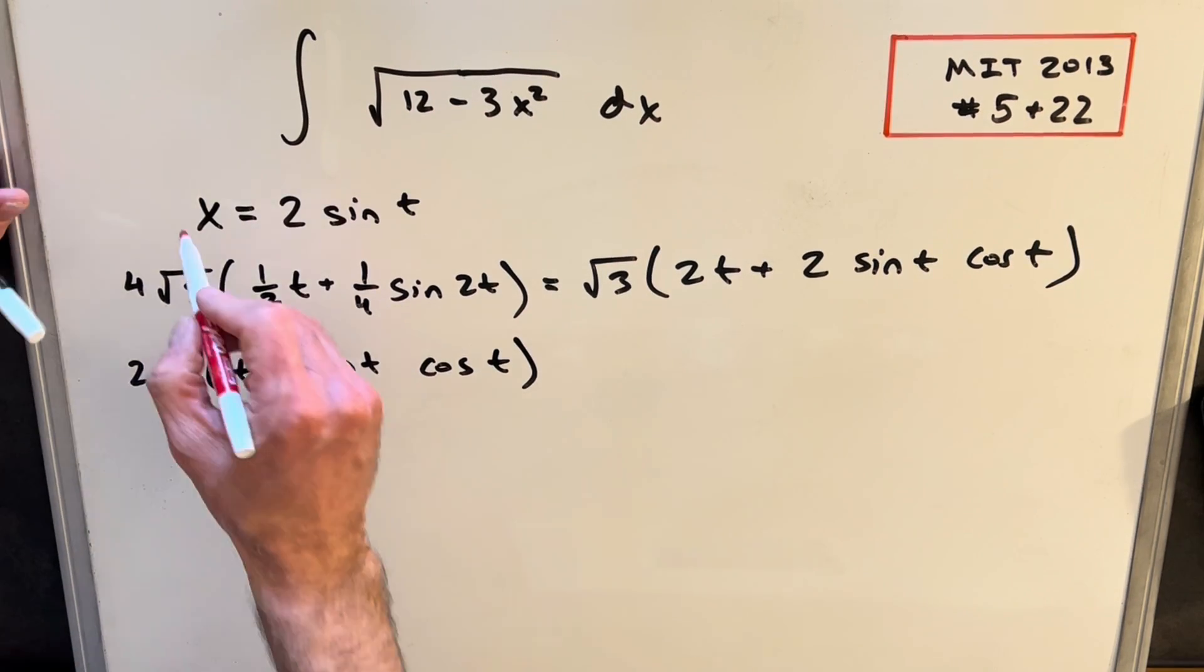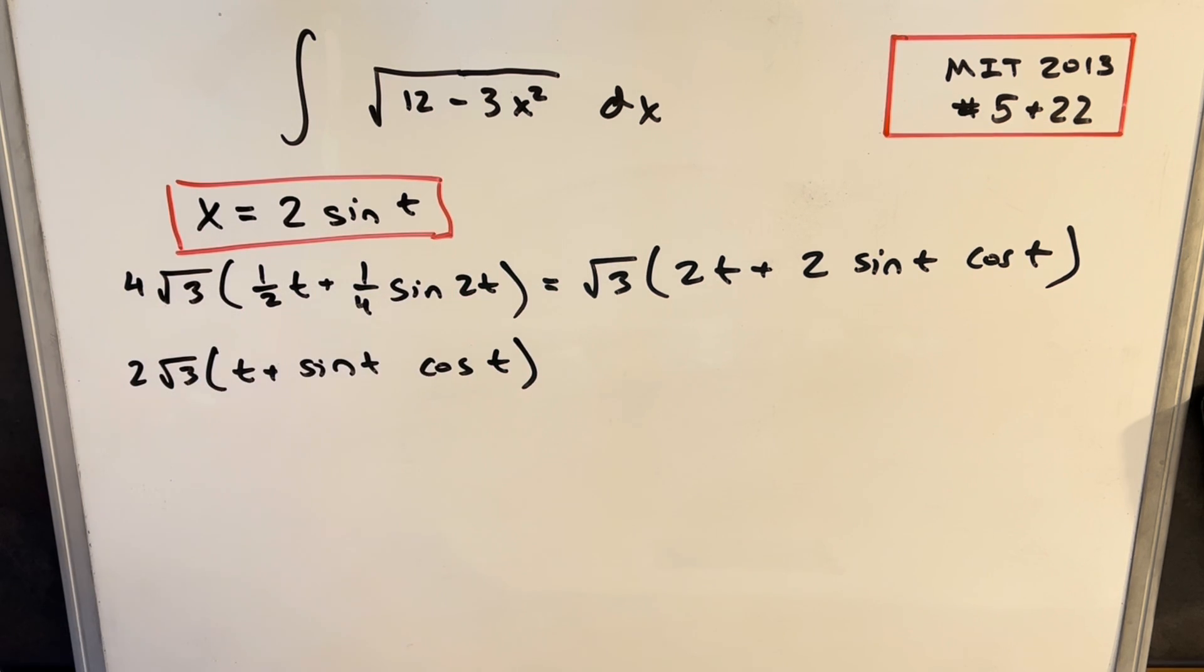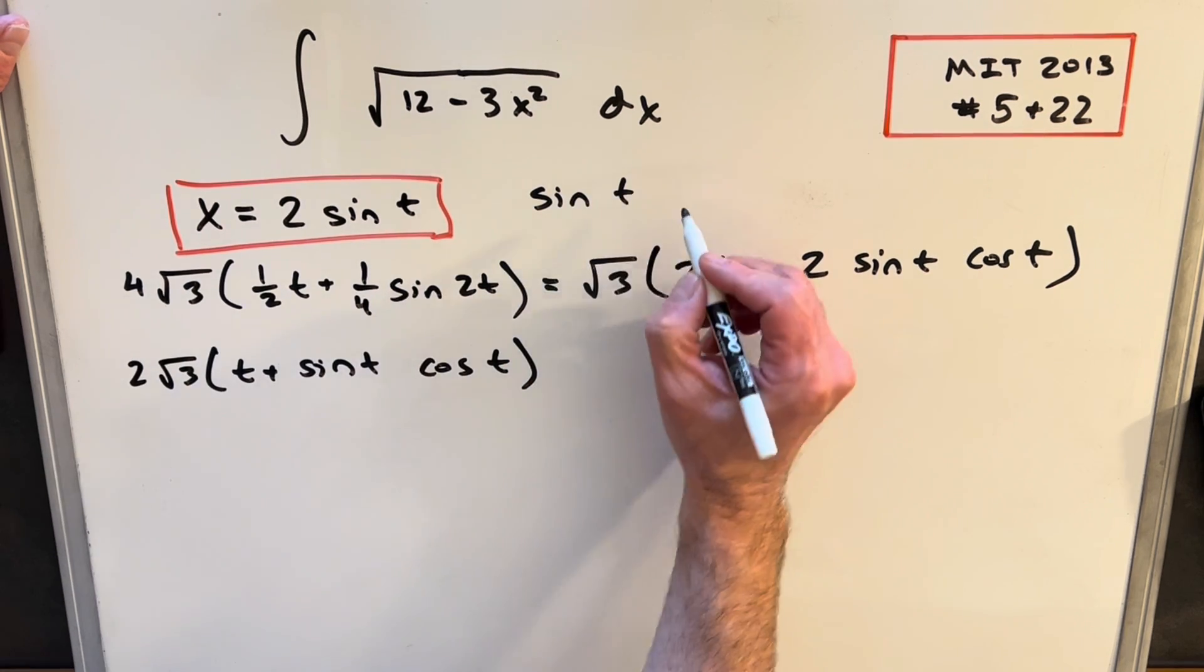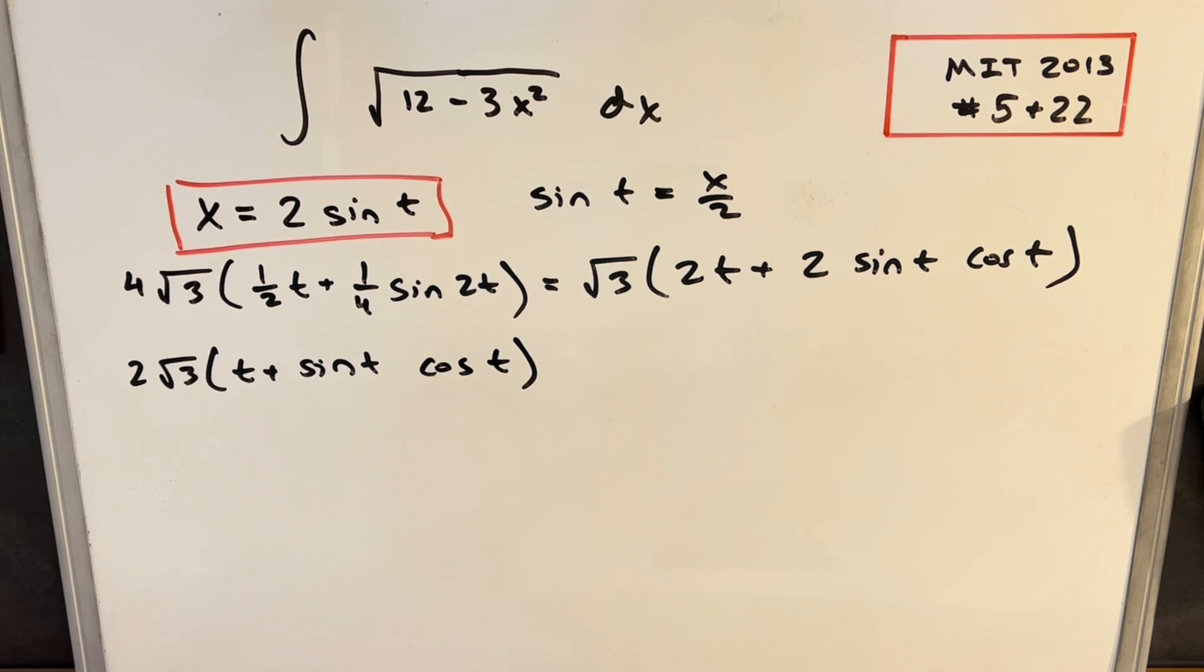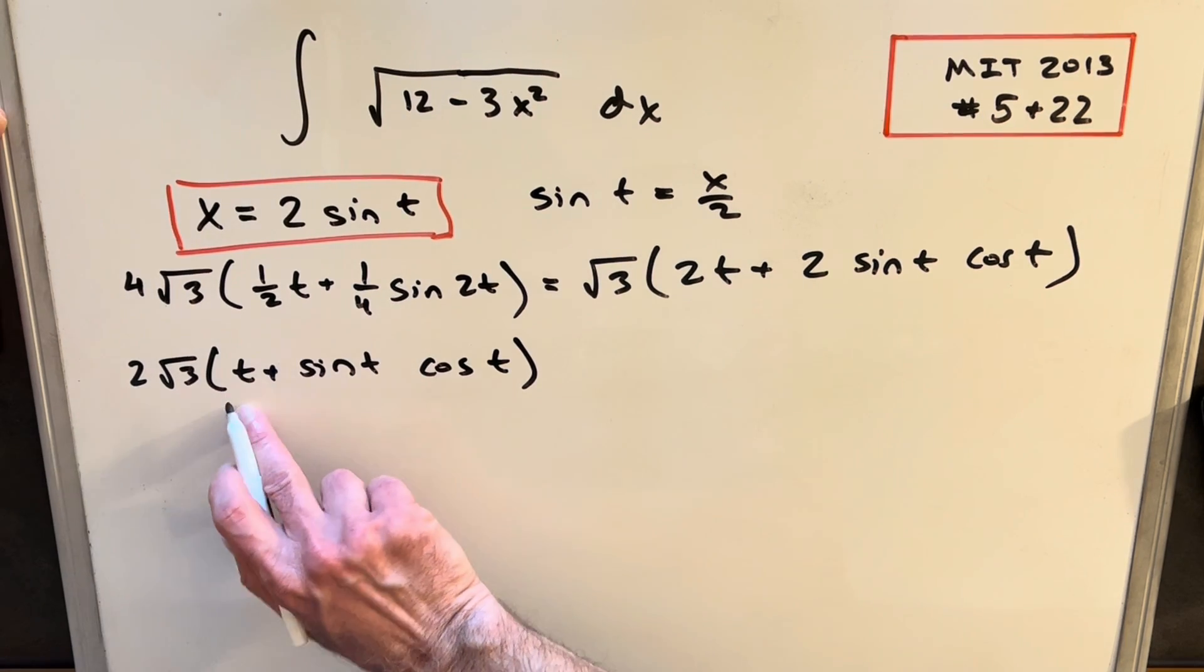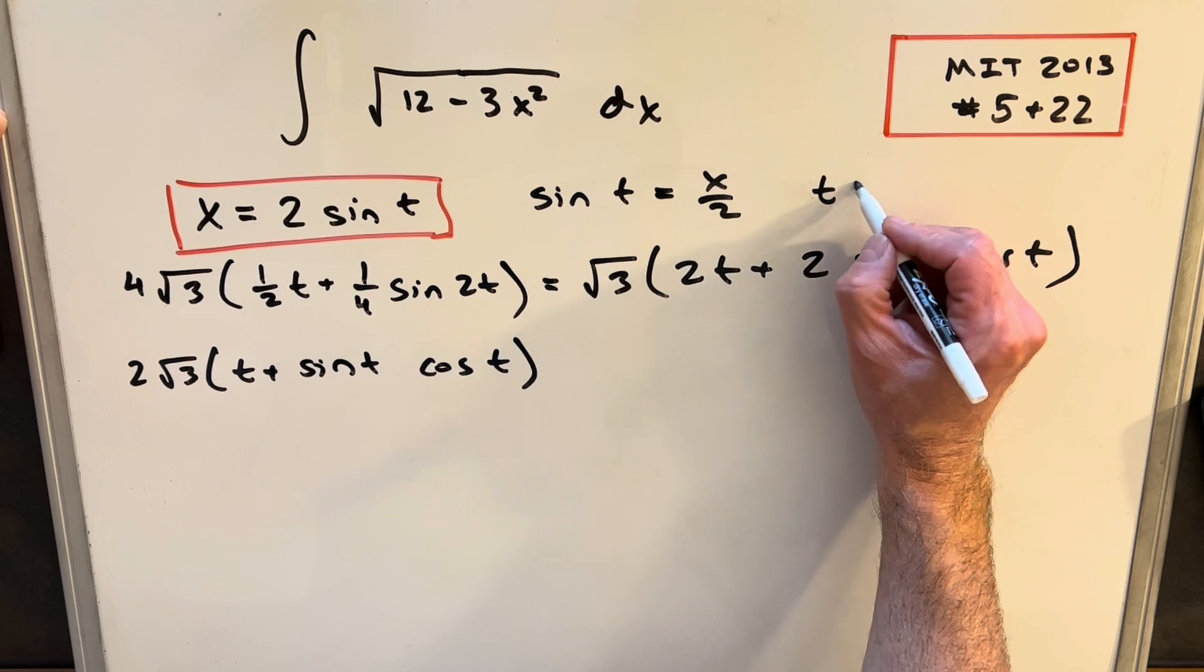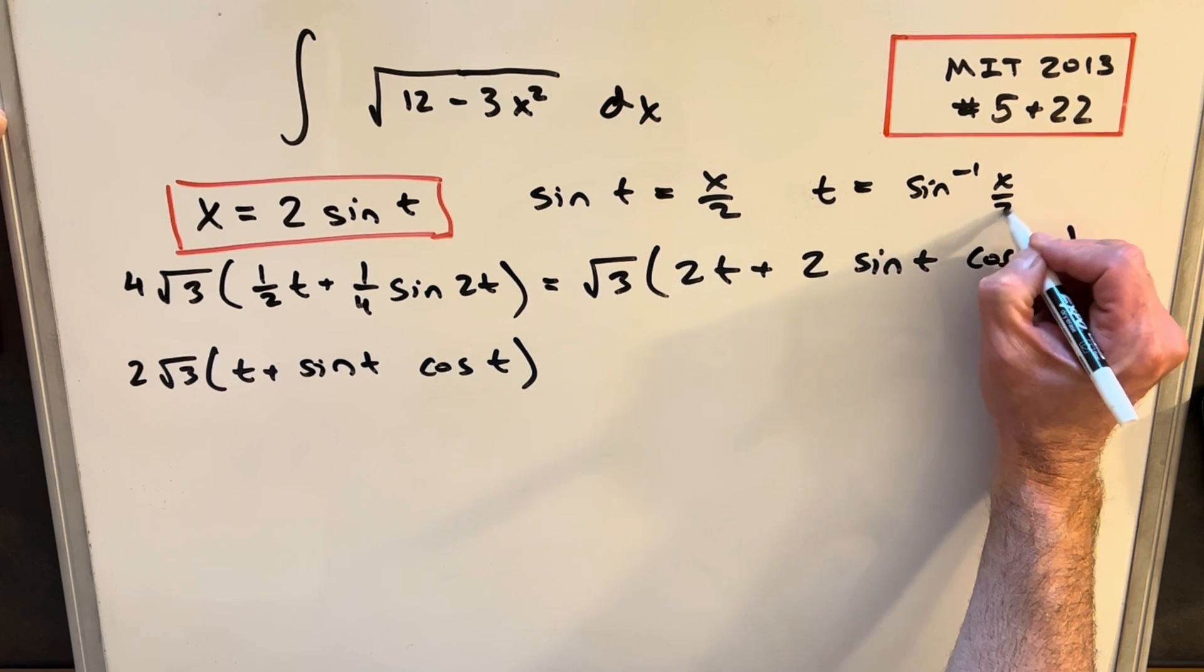And then before I back substitute, I'm just going to work with this to get all the values we need. So we have x equals 2 sine of t. Well, then we can say sine of t is just equal to x over 2 divided by 2 on both sides. And then we also can get a value for t that we're going to need by just taking the inverse sine. So we can say that t equals inverse sine or arc sine of x over 2.